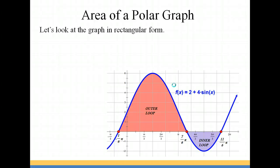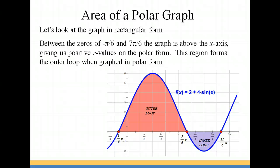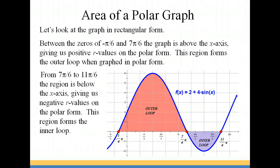Let's look at this in rectangular form. We have the equation f(x) equals 2 plus 4 sine x. Notice that we have zeros at negative π/6, 7π/6, and 11π/6. In between negative π/6 and 7π/6, we form the outer loop. In between 7π/6 and 11π/6, we form the inner loop. Between negative π/6 and 7π/6, we have positive y values, which gives us positive radius lengths on our polar graph. When we're on the inner loop, we're below the x-axis, meaning we have negative y values. Converting to polar form, this means we have negative radius lengths, causing the inner loop to overlap the same area as the outer loop on our polar grid.